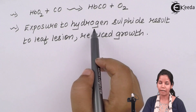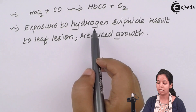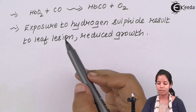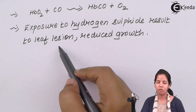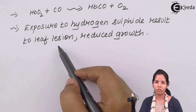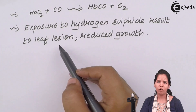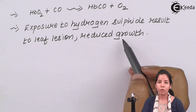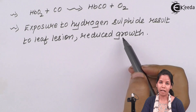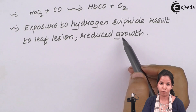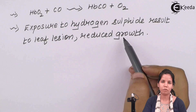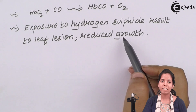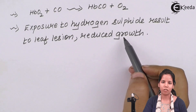Exposure to hydrogen sulfide gas, or H2S, results in leaf lesions — meaning falling of leaves — reduced growth of plants, stunted growth of plants, discoloration of plant surfaces, and reduction in stamens or pollen grain production.